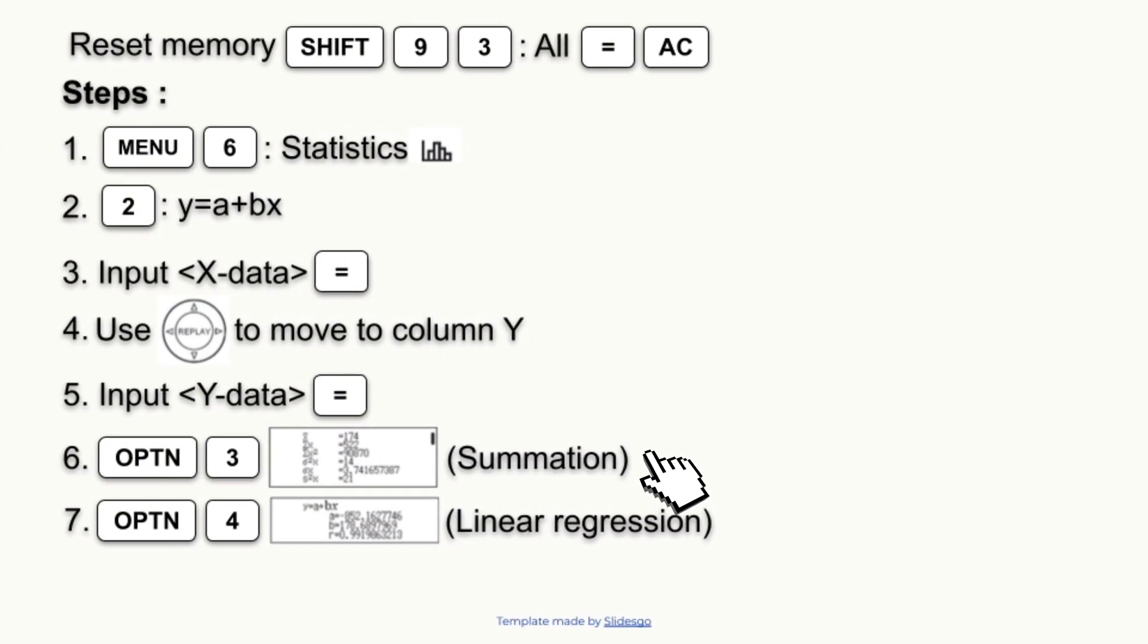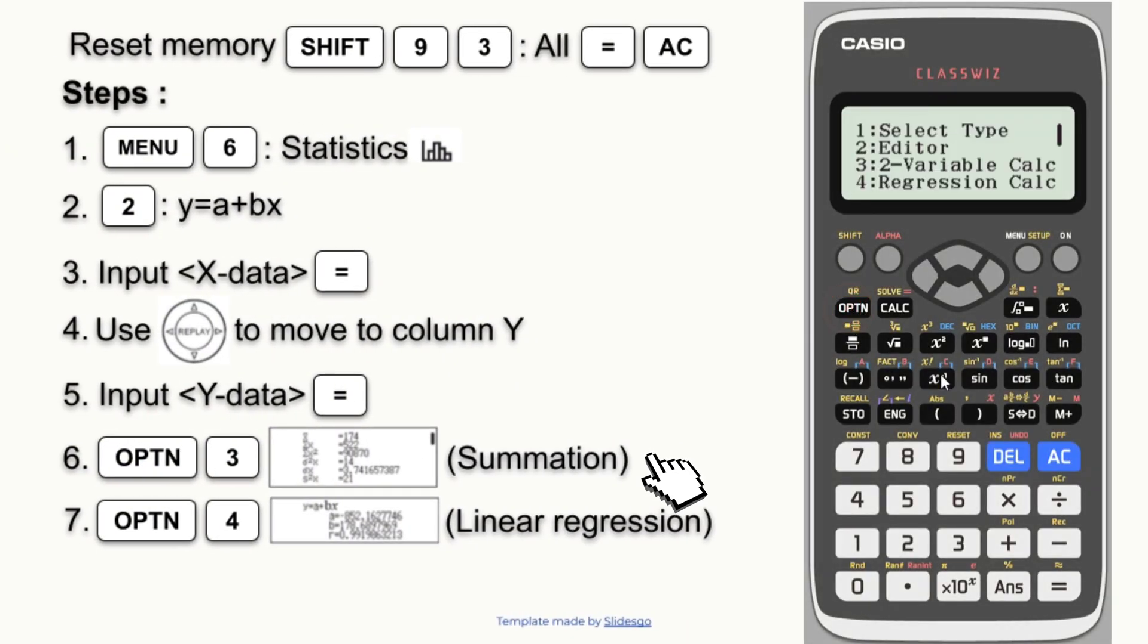The sixth step: press option button and 3 to see the list of summation and mean and also other things. Use the cursor to see more views on the screen.